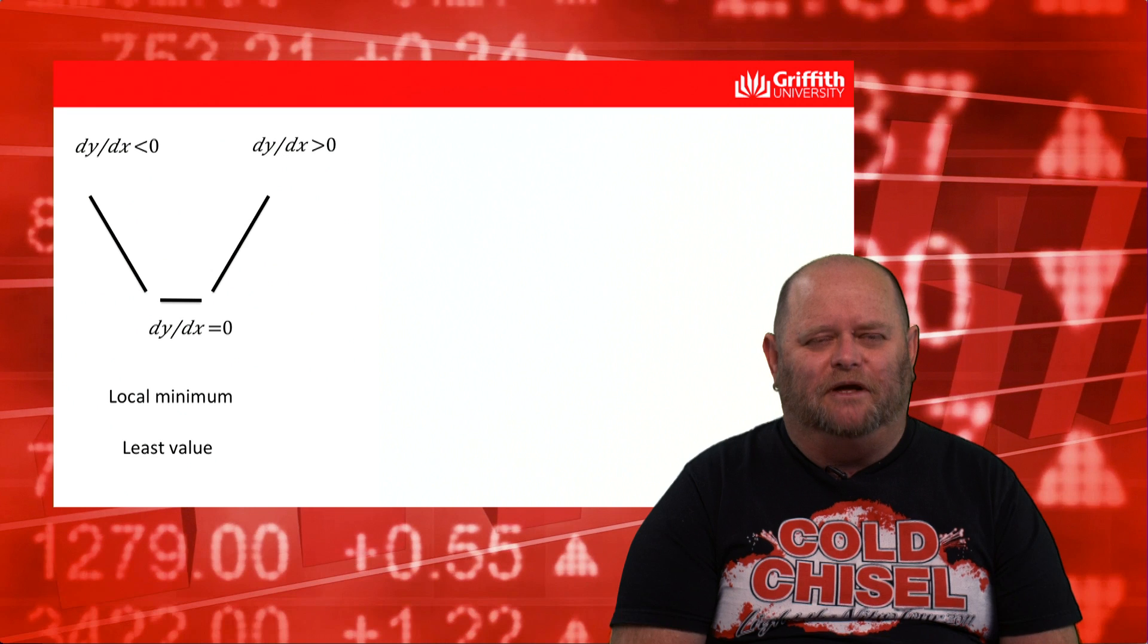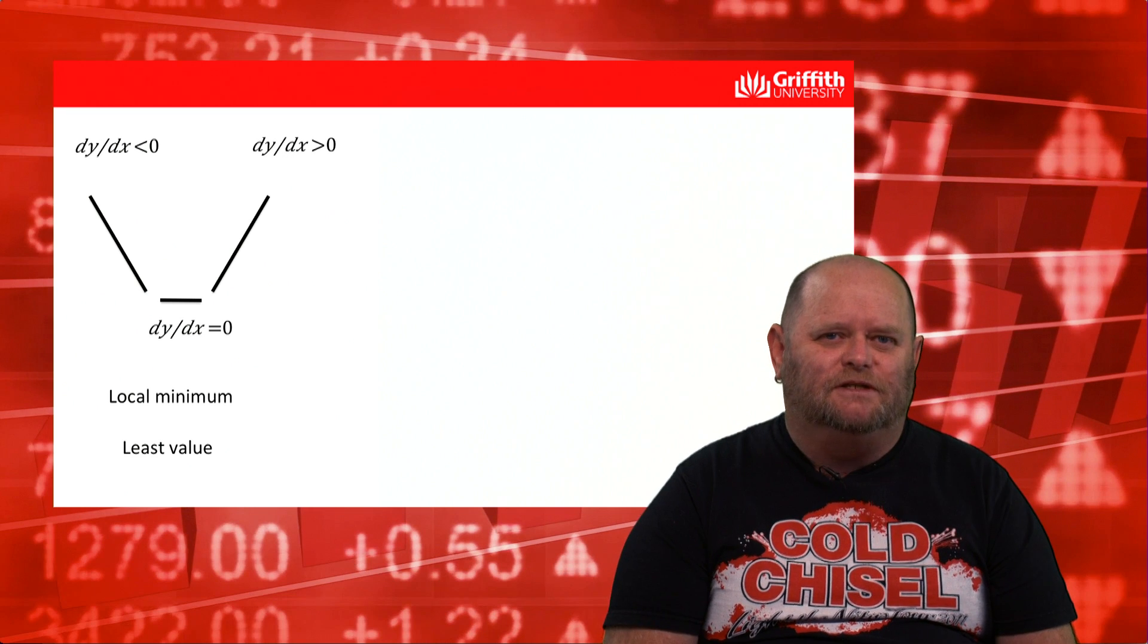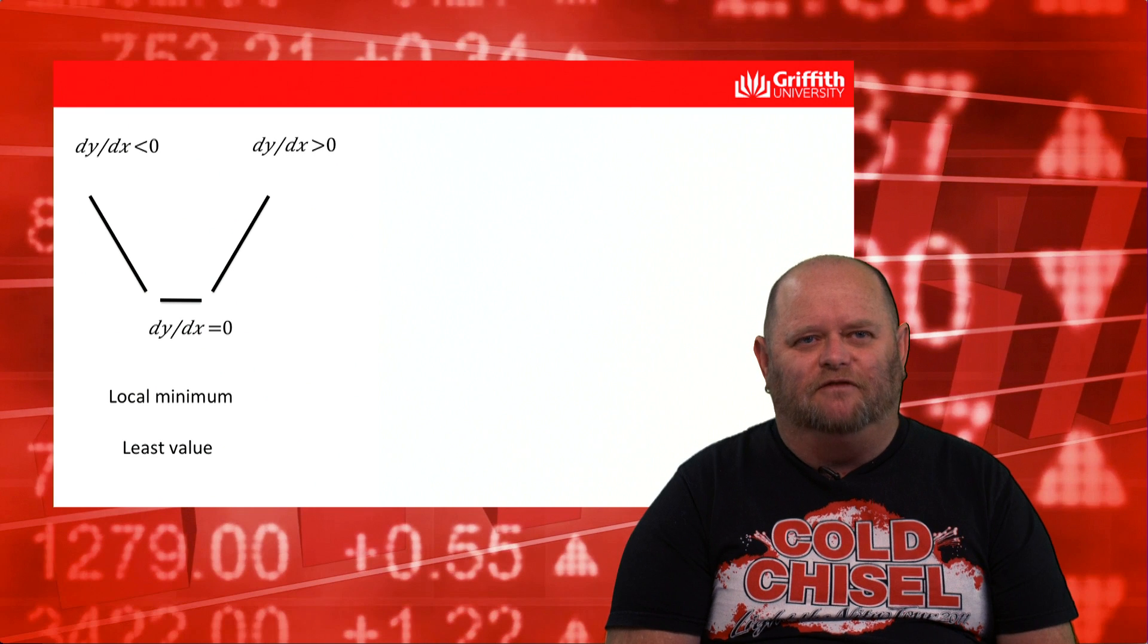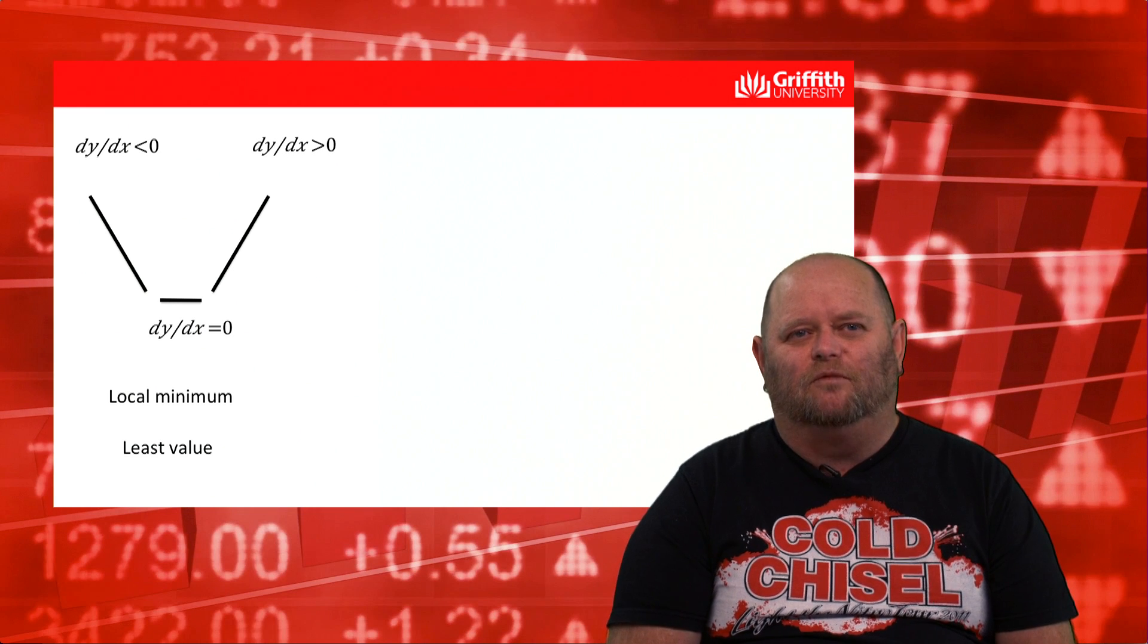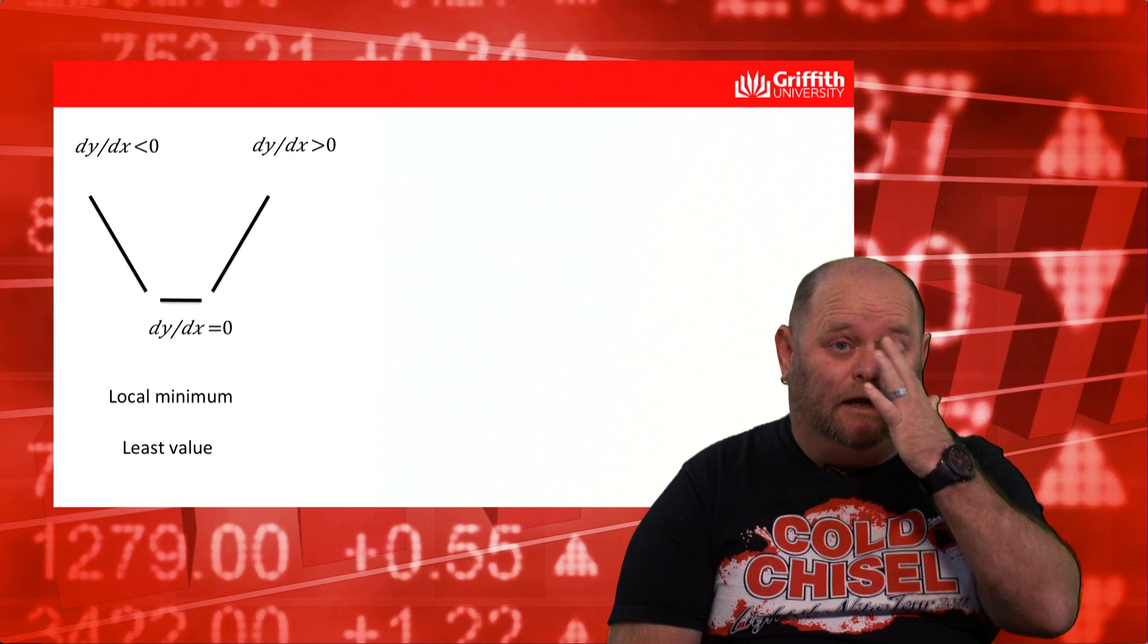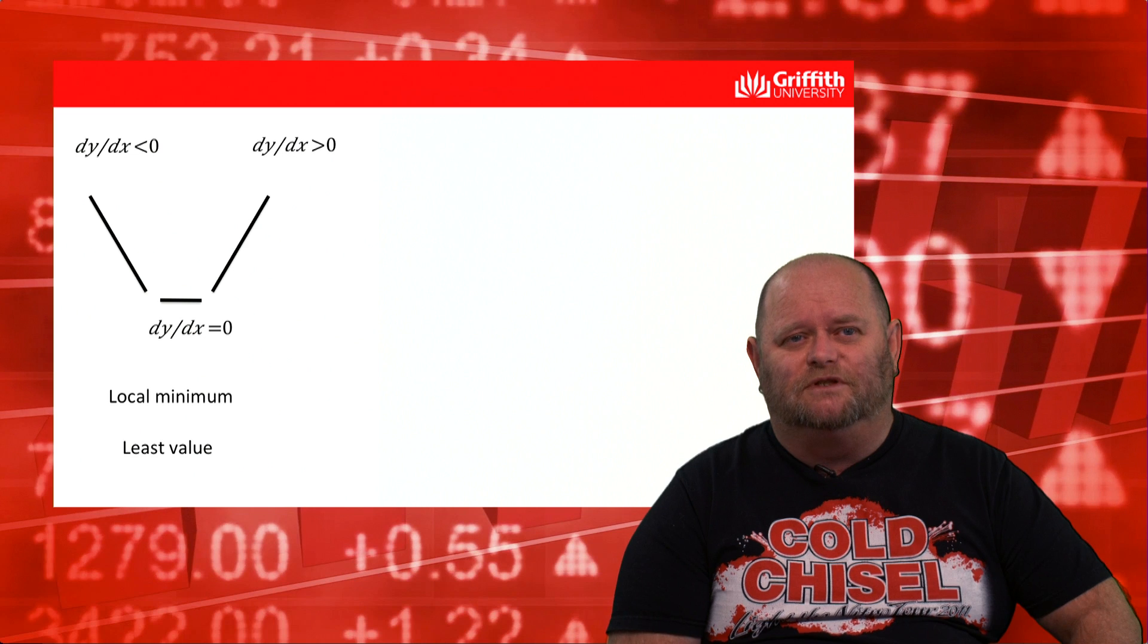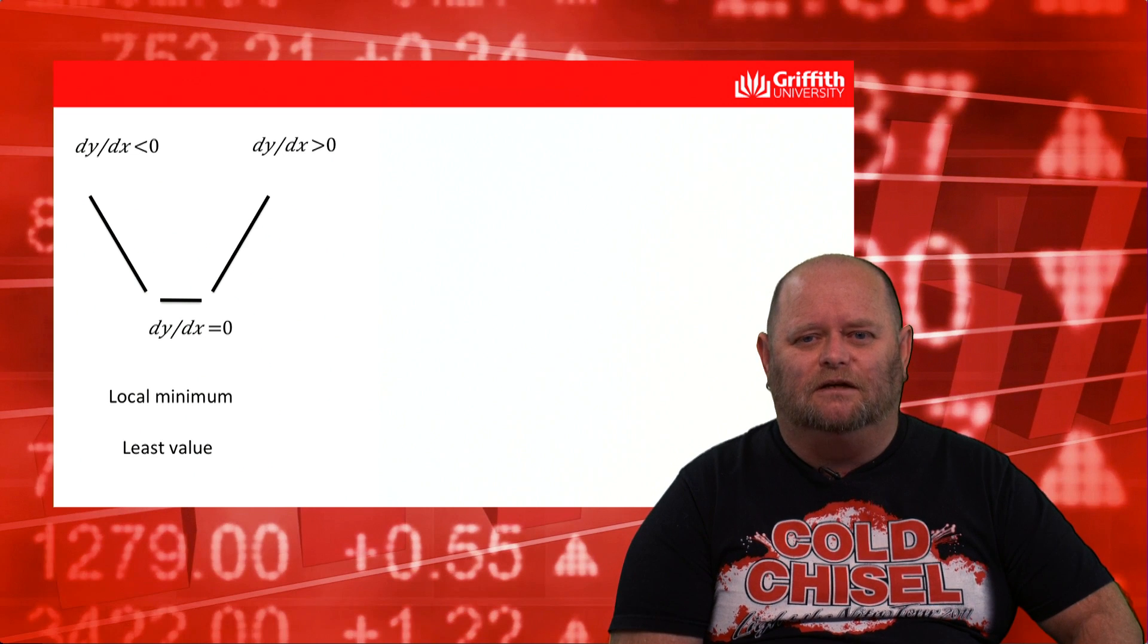Similarly, if we flip that around and say, again, we're looking where dy/dx is equal to zero. And we look at left and right values where that derivative is going to be negative and positive. Again, we're going to look at our graphical model. Our graphical model would tell us whether we're going to find a local minimum or a least value.